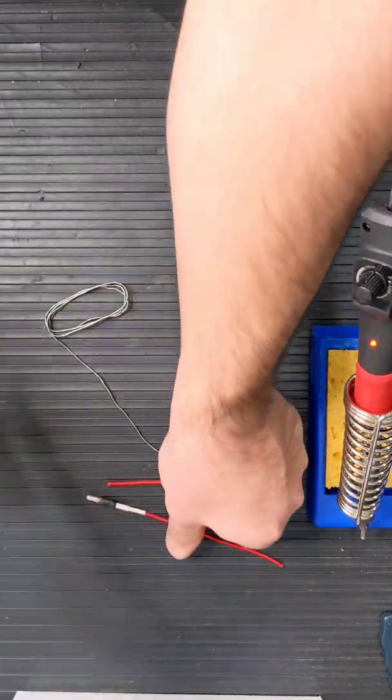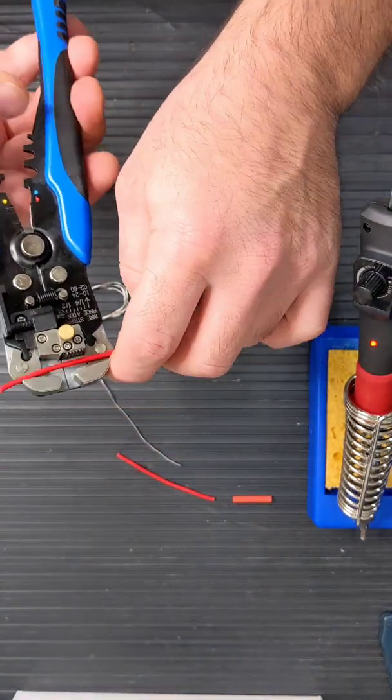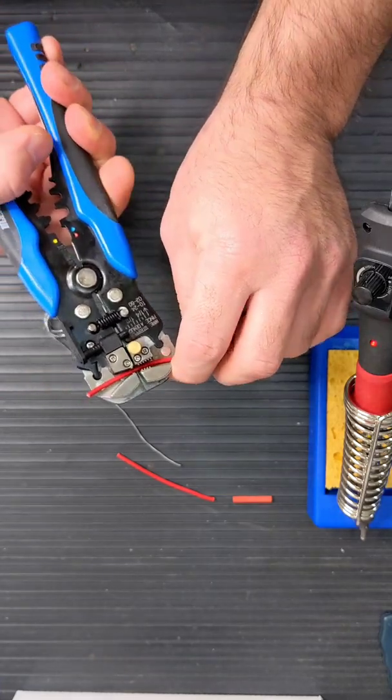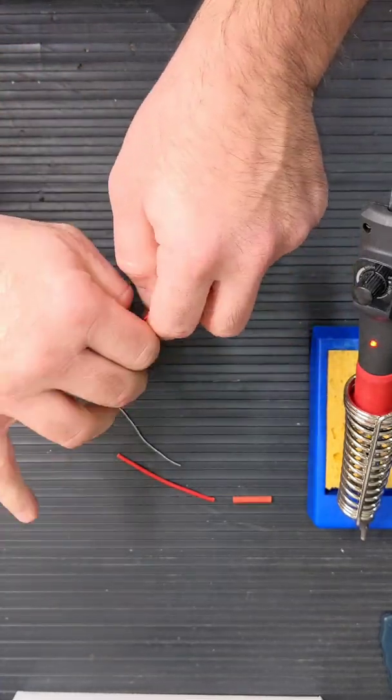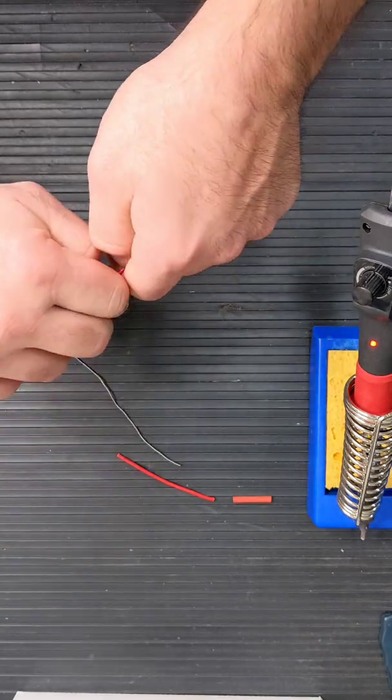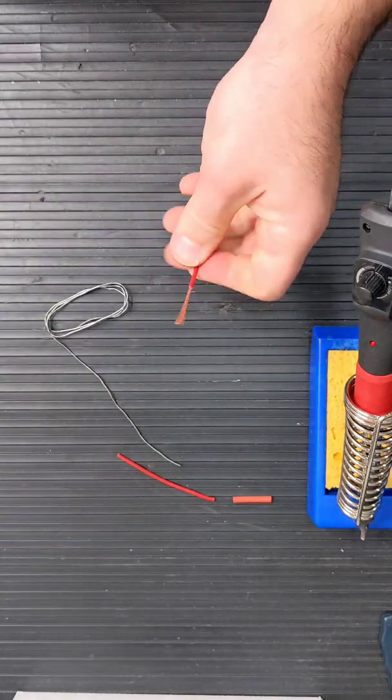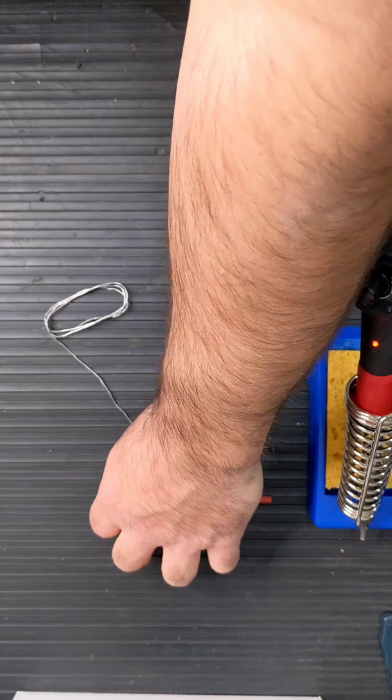We're going to start by stripping about an inch. So you want to have a good inch there of wire in order to create a good joint. I want to strip an inch off of each side.